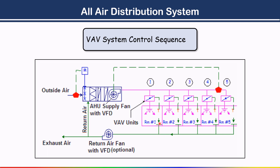Return air from the rooms is returned to the AHU; some air is exhausted to the atmosphere and fresh outside air is introduced to make up the balance. The supply fan is speed-controlled by a variable frequency drive and delivers air to individual rooms. The system serves multi-zone air conditioning with a VAV terminal box for each zone or room.